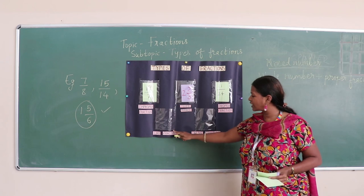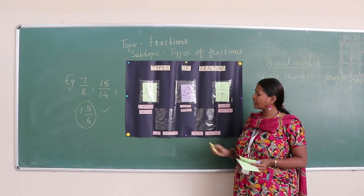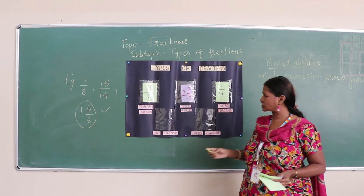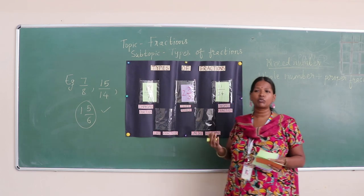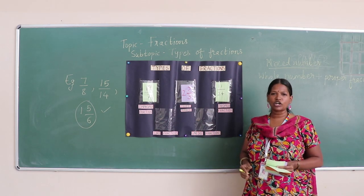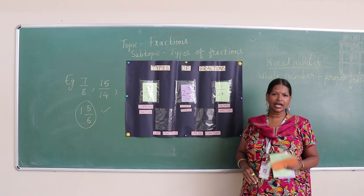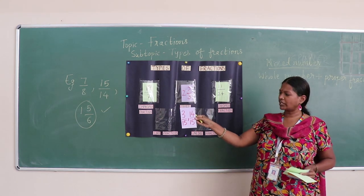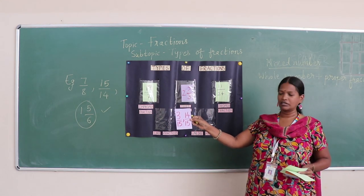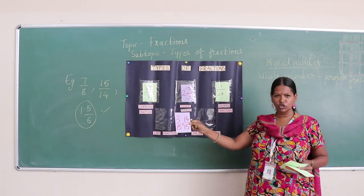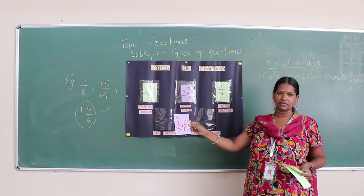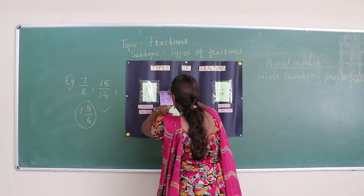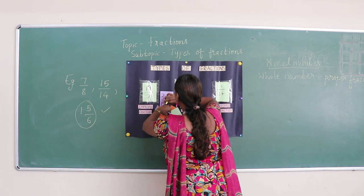We have two more types: like fractions and unlike fractions. Like fractions are a pair — 2 or more fractions whose denominators are the same. For example, 3 upon 15 and 14 upon 15 have different numerators but the same denominator, so these are called like fractions.